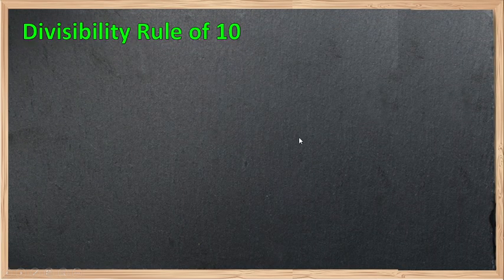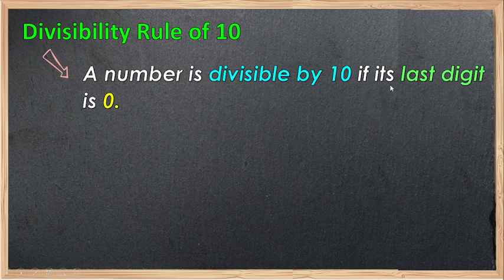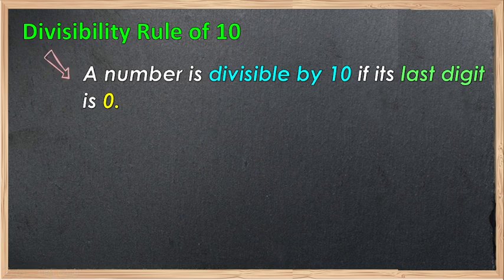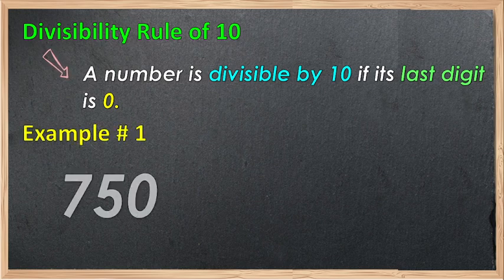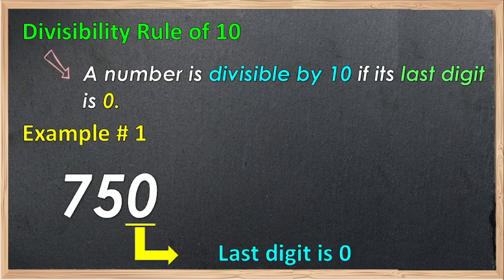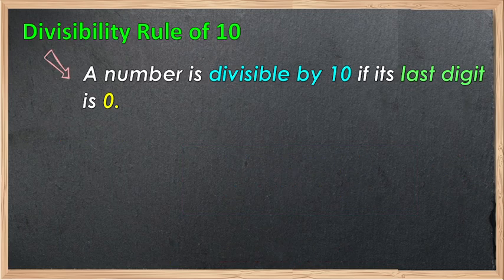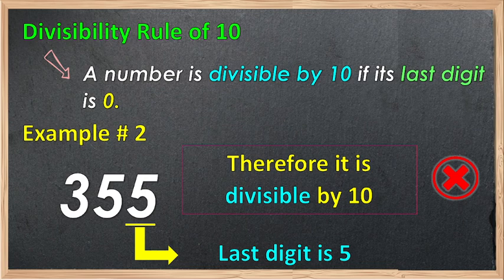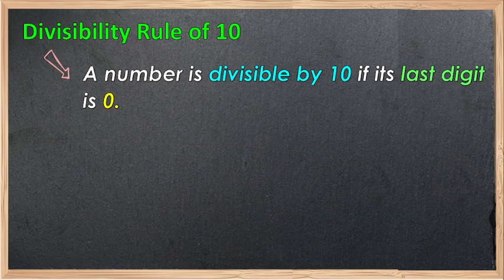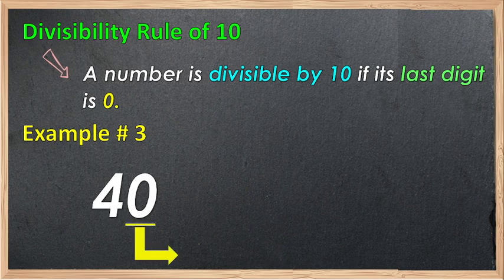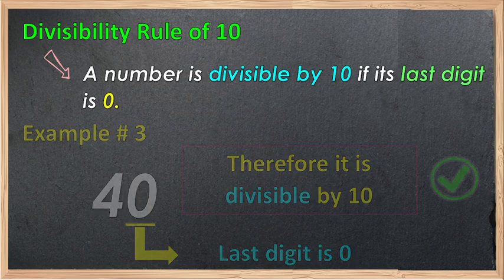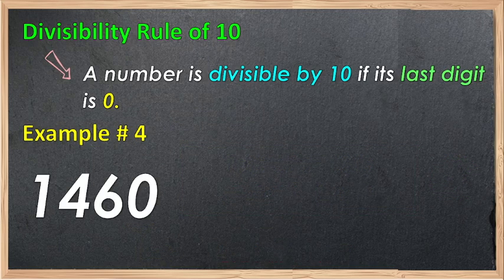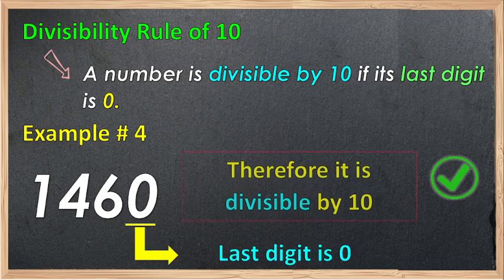Now let's focus on the divisibility rule of 10, focusing on the last digit. A number is divisible by 10 if the last digit is 0. You need to see if the last digit is 0. Example 1: 750. The last digit is 0. Therefore, divisible by 10. Example 2: 355. The last digit is 5. Therefore, not divisible by 10, because it does not end with 0. Example 3: 40. The last digit is 0. Therefore, divisible by 10. Example 4: 1,460. The last digit is 0. Therefore, divisible by 10.